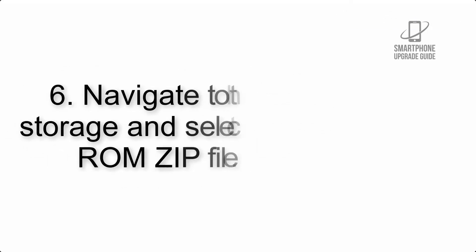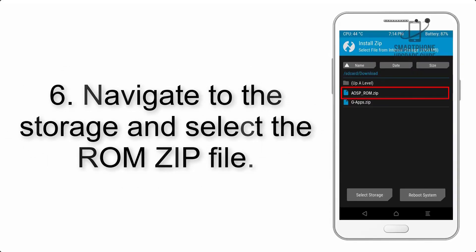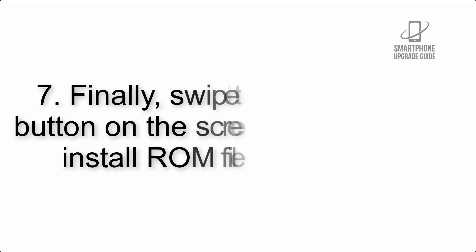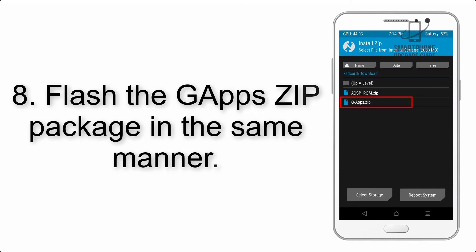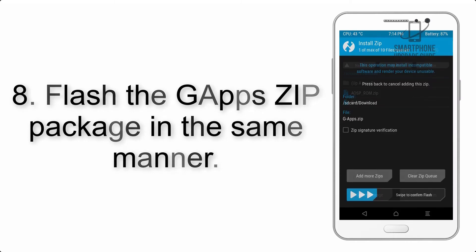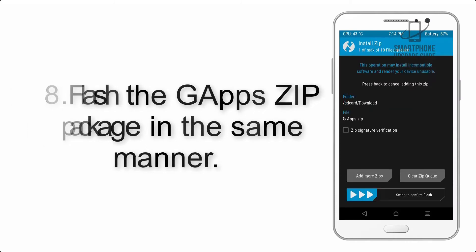Step 5: Go back to the recovery main screen and tap on the Install button. Step 6: Navigate to the storage and select the ROM zip file. Step 7: Swipe the button on the screen to install the ROM file. Step 8: Flash the GApps zip package in the same manner.